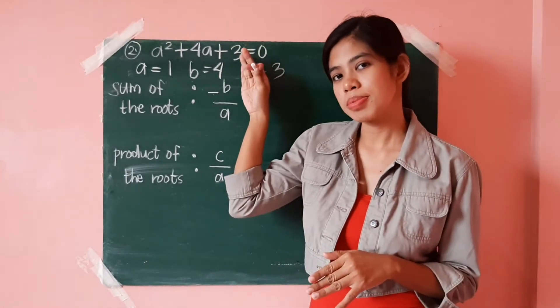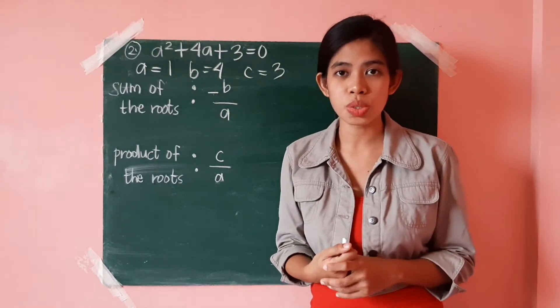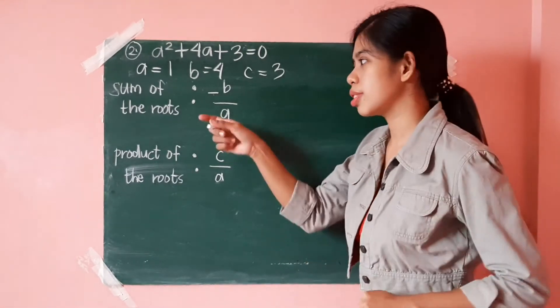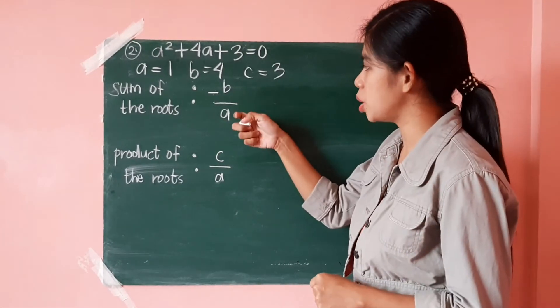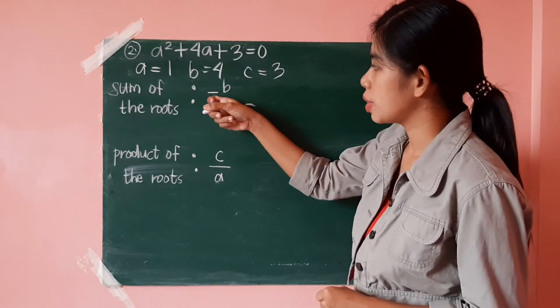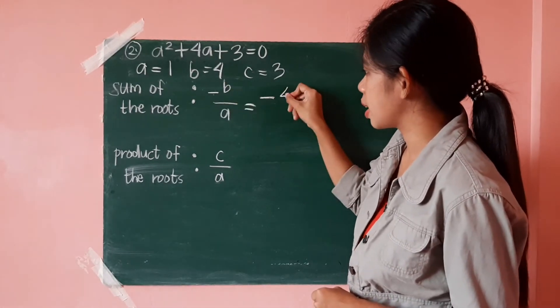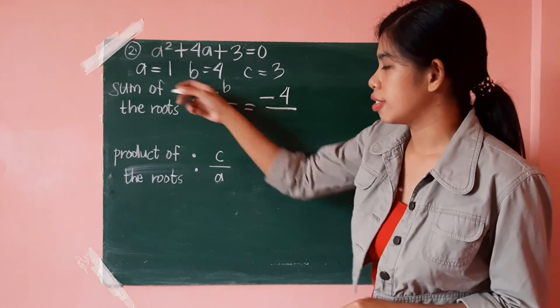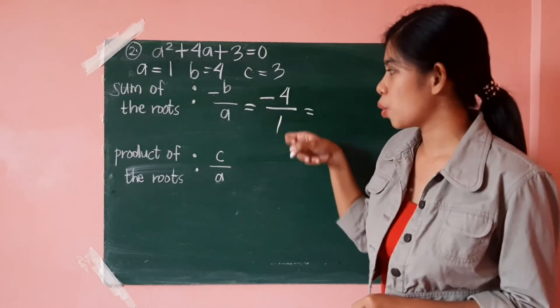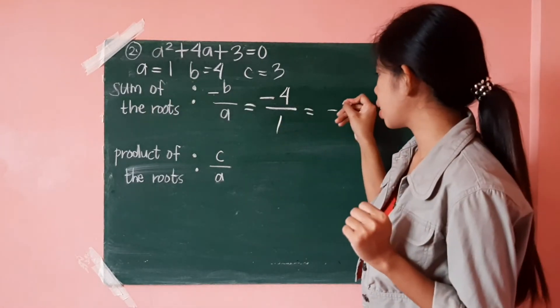Then, you may now substitute these values in the formula of the sum of the roots and product of the roots. Let's start with the sum of the roots. So, that's negative b over a. So, negative value of b, that's negative 4, over value of a, which is 1. Negative 4 divided by 1 is just negative 4.